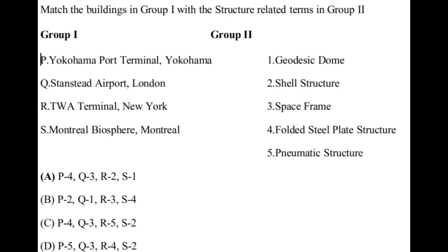The correct answer is option A. P4 — Yokohama Port Terminal is a folded steel plate structure. Q3 — Stansted Airport, London, is a space frame structure. TWA Terminal, New York, is a shell structure — option 2. And the last one, Montreal Biosphere, Montreal, is option 1 — the geodesic dome.